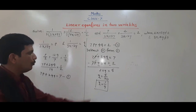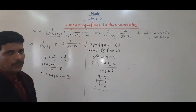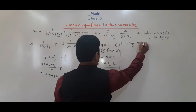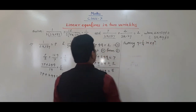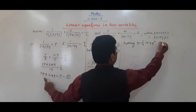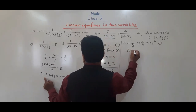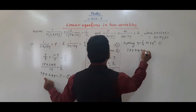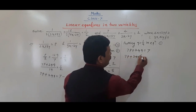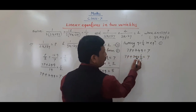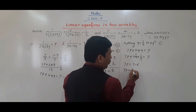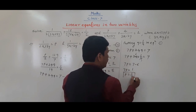We have the value of q. Putting q = 1 by 4 in equation 1, which is 7p + 24q = 7: 7p + 24 into (1 by 4) = 7, so 7p + 6 = 7, giving 7p = 1, therefore p = 1 by 7.